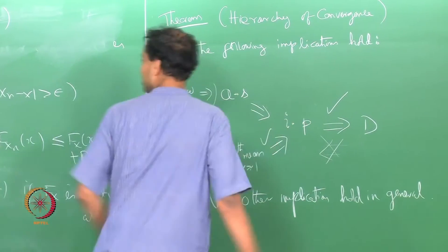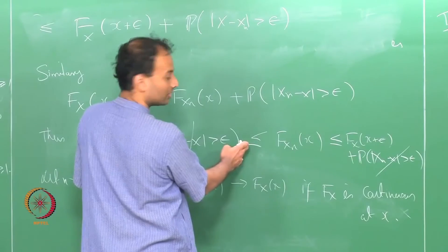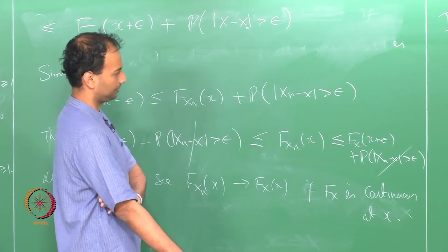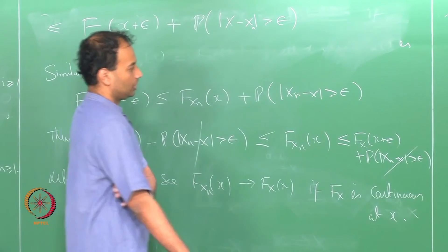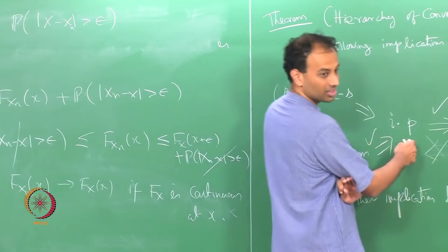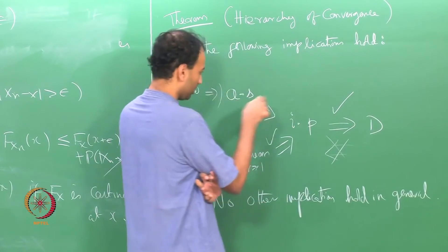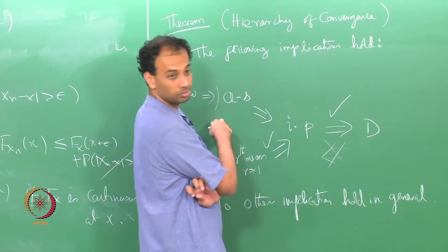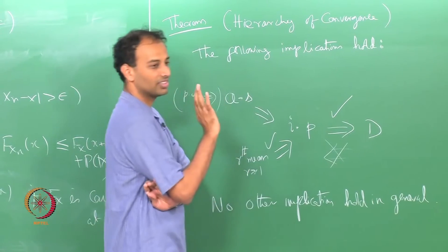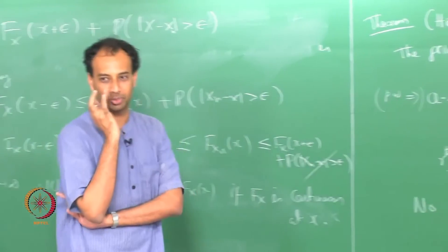Convergence in probability just needs that probability to go to 0 as n tends to infinity. We have to prove almost sure convergence implies convergence in probability, and give a counter-example that convergence in probability does not imply almost sure convergence — neither of which is a two-step argument.